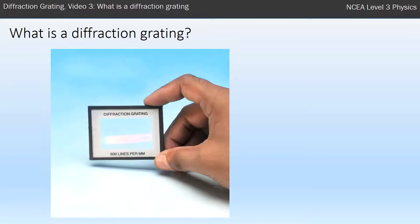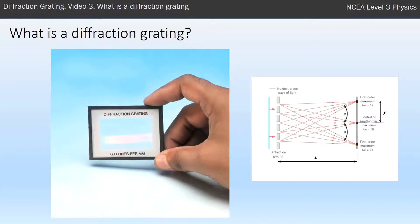So diffraction gratings have many slits, and often the slits are much closer together. You can see a diagram here—you still get an interference pattern, you still get diffraction through the slits, and you still have path differences. Light has to travel different distances from each slit, so you get places where the path difference is whole numbers of wavelengths, and that means you get constructive interference—bright spots.